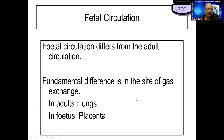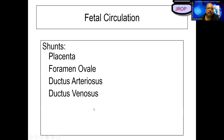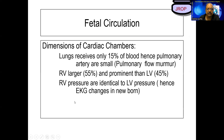Fetal circulation differs from adult circulation because fetal gas exchange lies in the placenta, whereas in adults it lies in the lungs. So we have shunts at the level of the placenta, foramen ovale, ductus arteriosus, and ductus venosus. Lungs only receive 15% of the blood supply, hence pulmonary arteries are small.